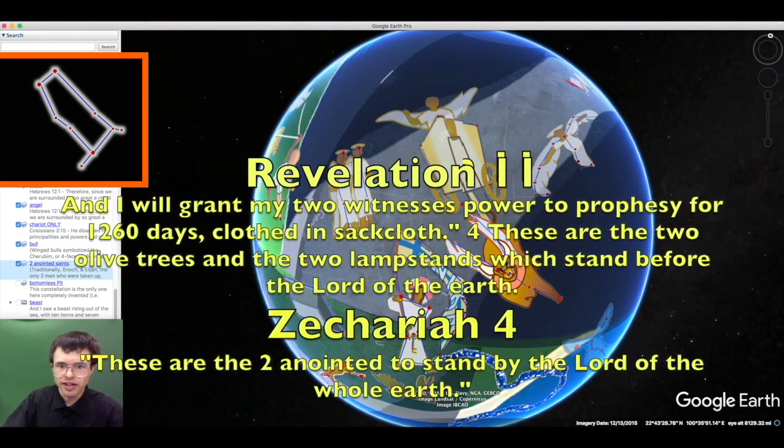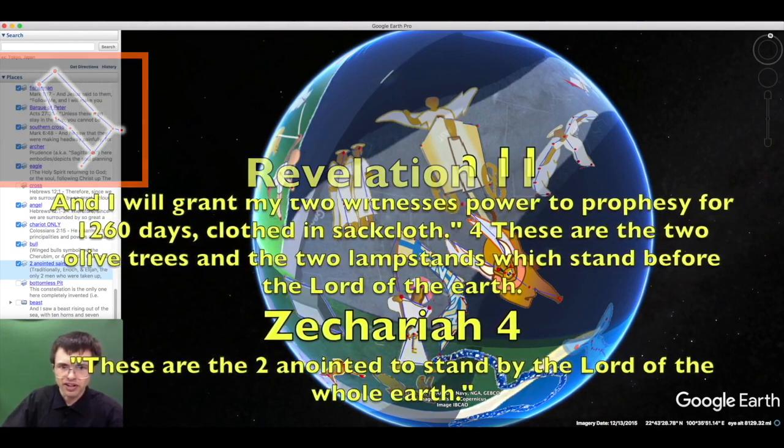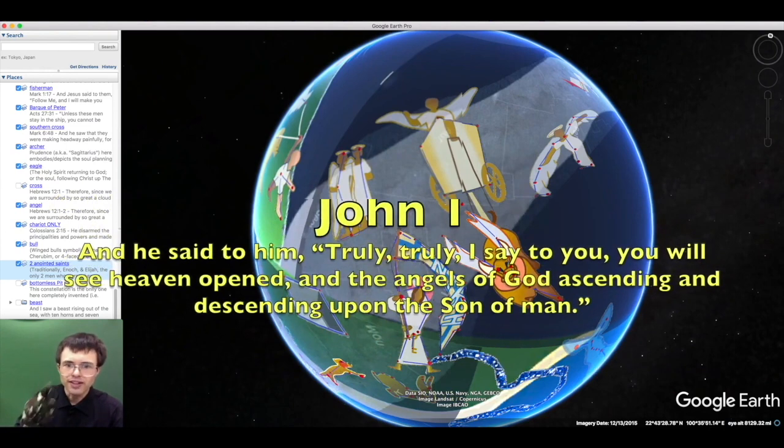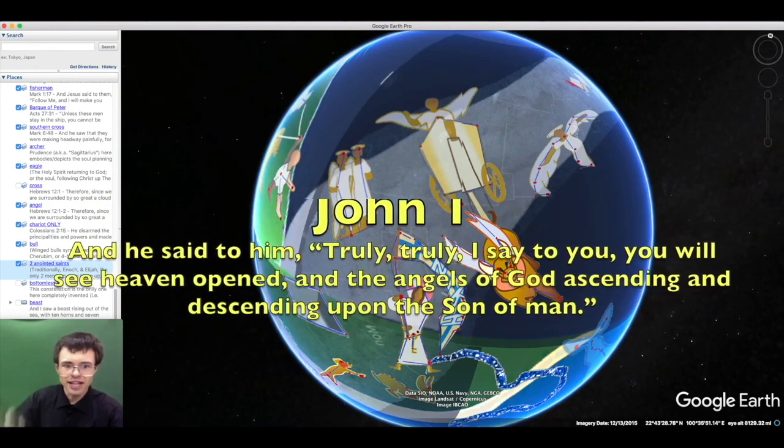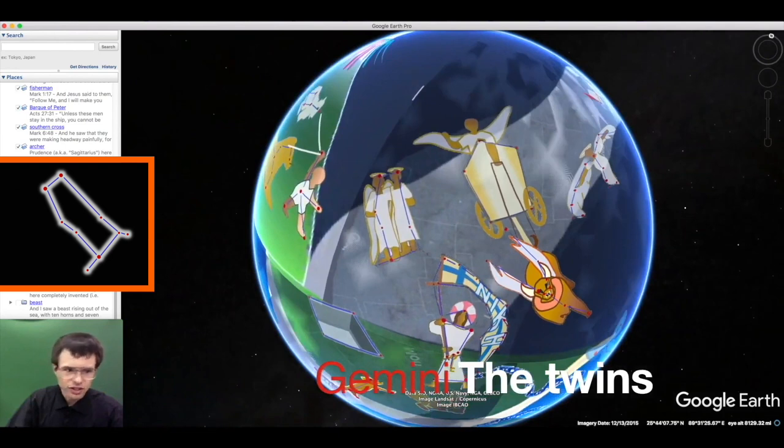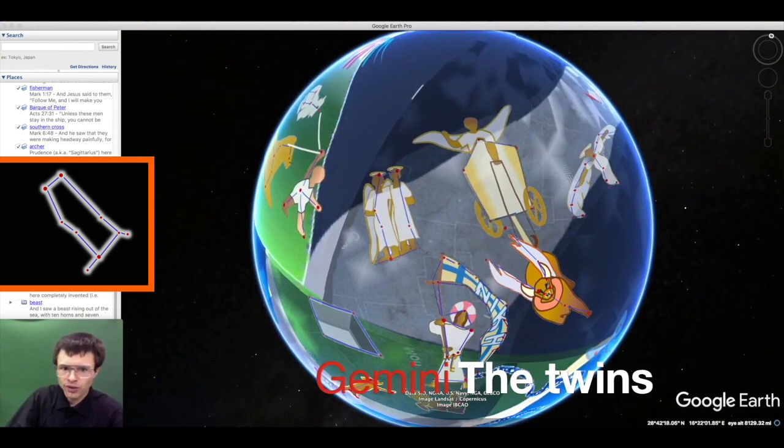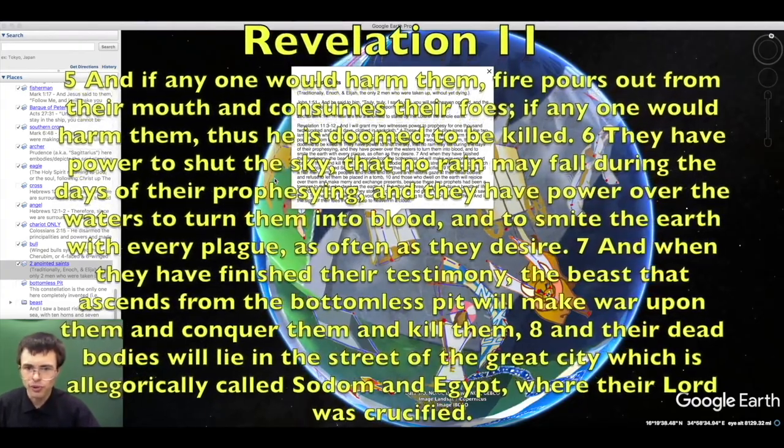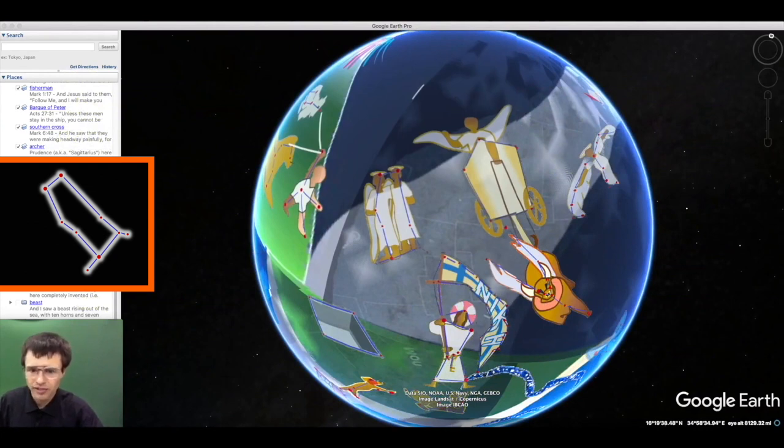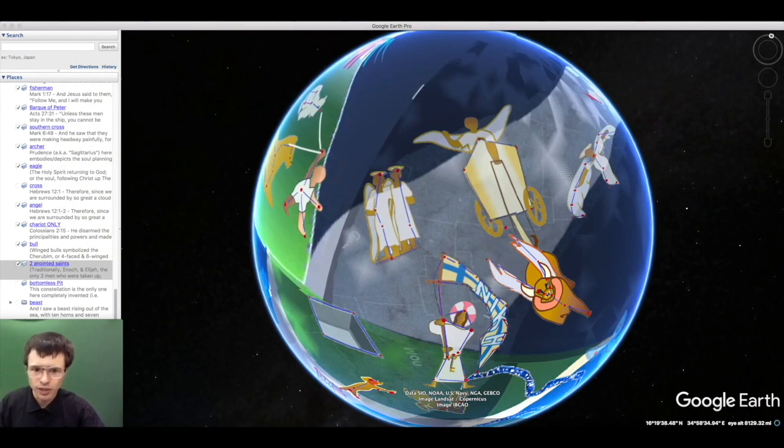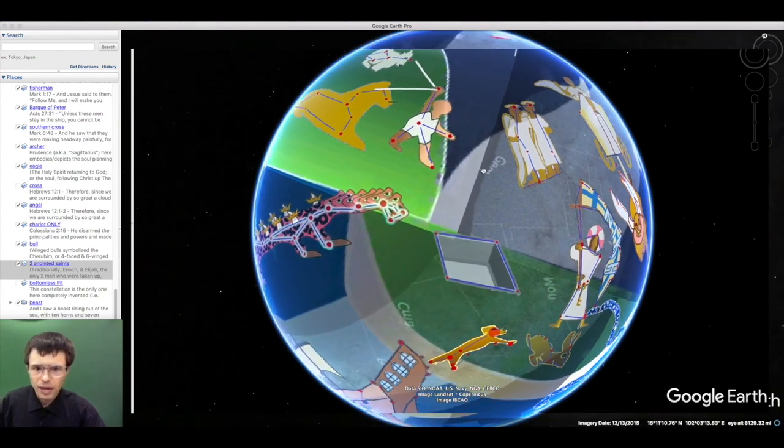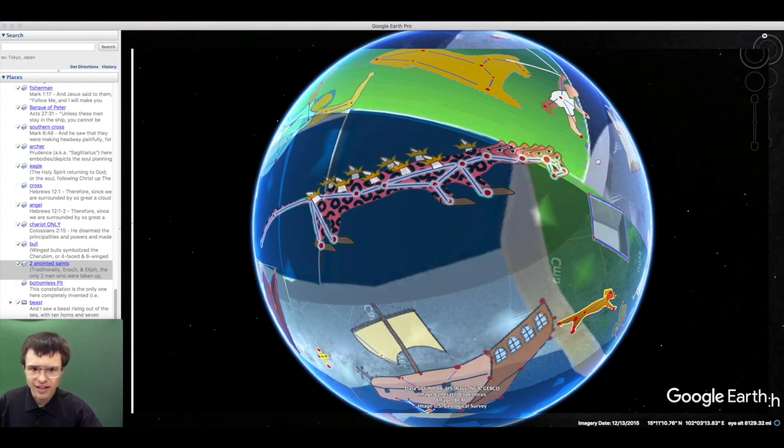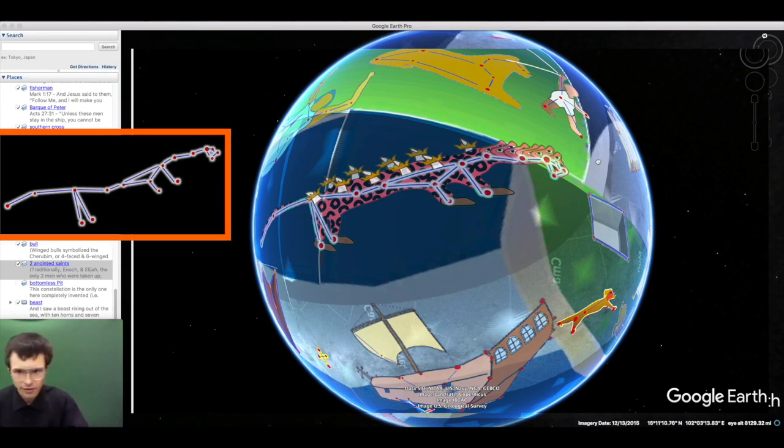And I will grant my two witnesses power to prophesy. These are the two who stand by the Lord of all the earth, as the book of Zechariah said. And Jesus said to him, Truly, truly, I say to you, you will see heaven opened, and the angels of God ascending and descending upon the Son of Man. And in this case we have the constellation Gemini. These are the two anointed who stand by the Lord of all the earth. Traditionally it refers to Enoch and Elijah, who were the only two humans who were taken up without yet dying. They will die at the end. And when they have finished their testimony, the beast that ascends from the bottomless pit will make war upon them.